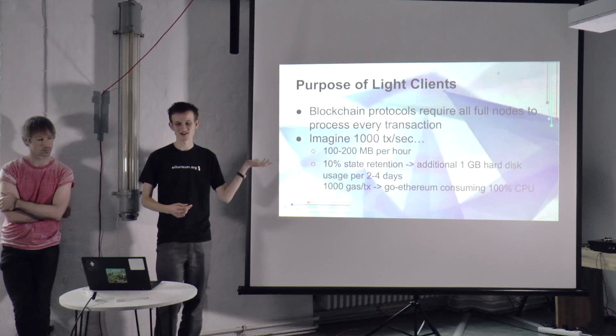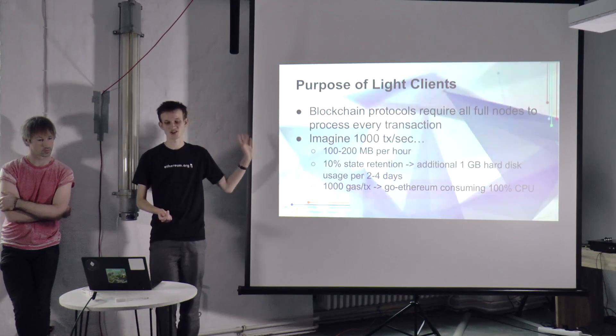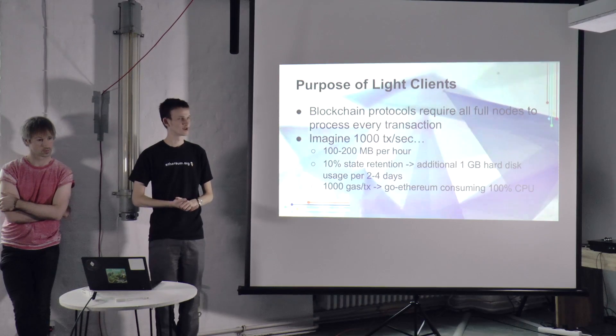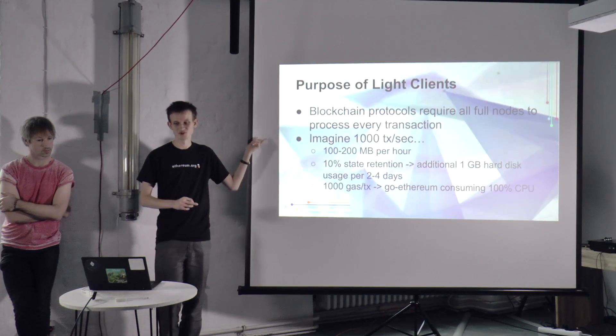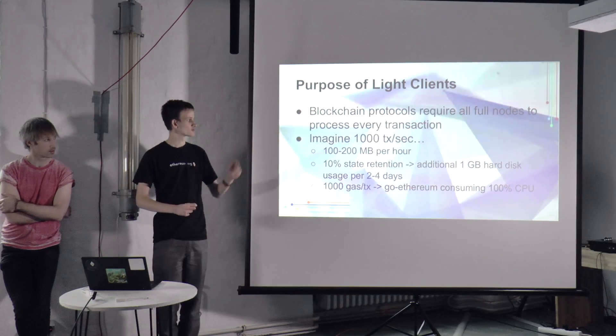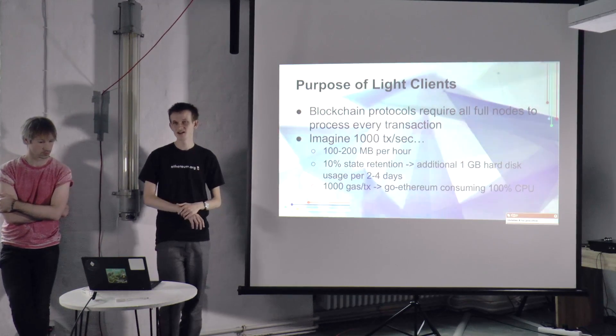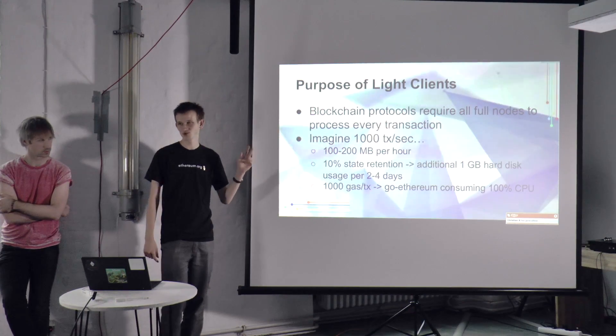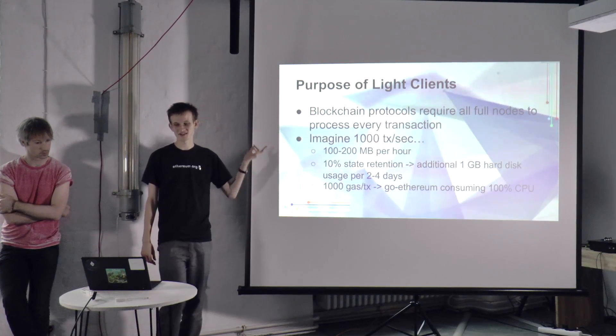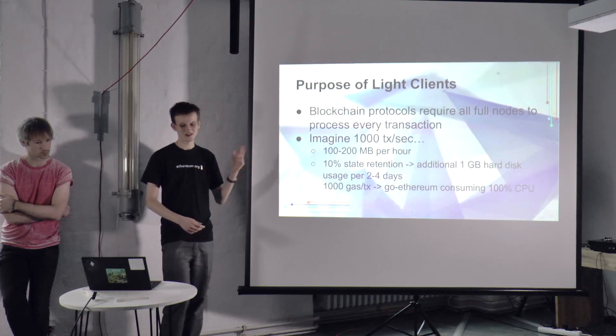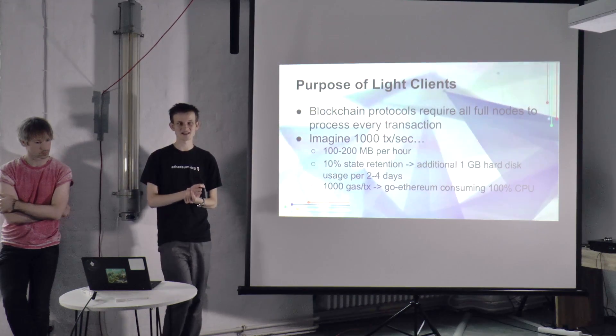Now with something like Ethereum, in some ways our protocol is more efficient, in some ways it's less efficient because we have to store a bunch more stuff. But if usage gets to any significant points — if you imagine we have something like a thousand transactions a second — then the amount of resources it'll take to run a full node is 100 to 200 megabytes per hour just processing transactions. Assuming 10% of those transactions increase the state, which is about accurate for Bitcoin, that's a gigabyte of hard disk space every two or four days. A thousand gas a transaction, that's a million gas a second. I believe that's pretty much 100% of what Go-Ethereum can do right now, if not more.